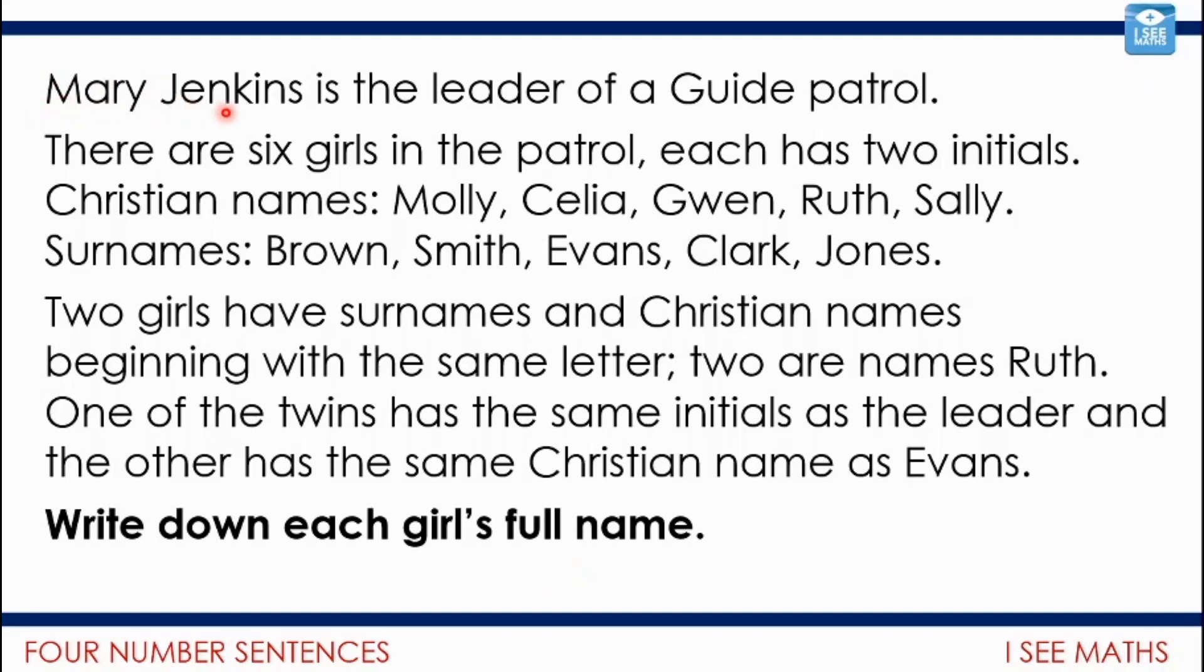Mary Jenkins is the leader of a guide patrol. There are six girls in her patrol. Each has two initials. So for example Mary Jenkins, the initials are MJ. The initials means the first two letters of your name. The Christian names, the first names, for the six children are Molly, Celia, Gwen, Ruth, Ruth, and Sally. The surnames for the six children are Brown, Smith, Evans, Clark, and Jones. You might notice there are six girls in the patrol, we're only given five surnames. Now two girls have surnames and Christian names beginning with the same letter. One of the twins has the same initials as the leader. And the other of the twins has the same Christian name as Evans, the girl whose surname is Evans. And then it says write down each girl's full name.